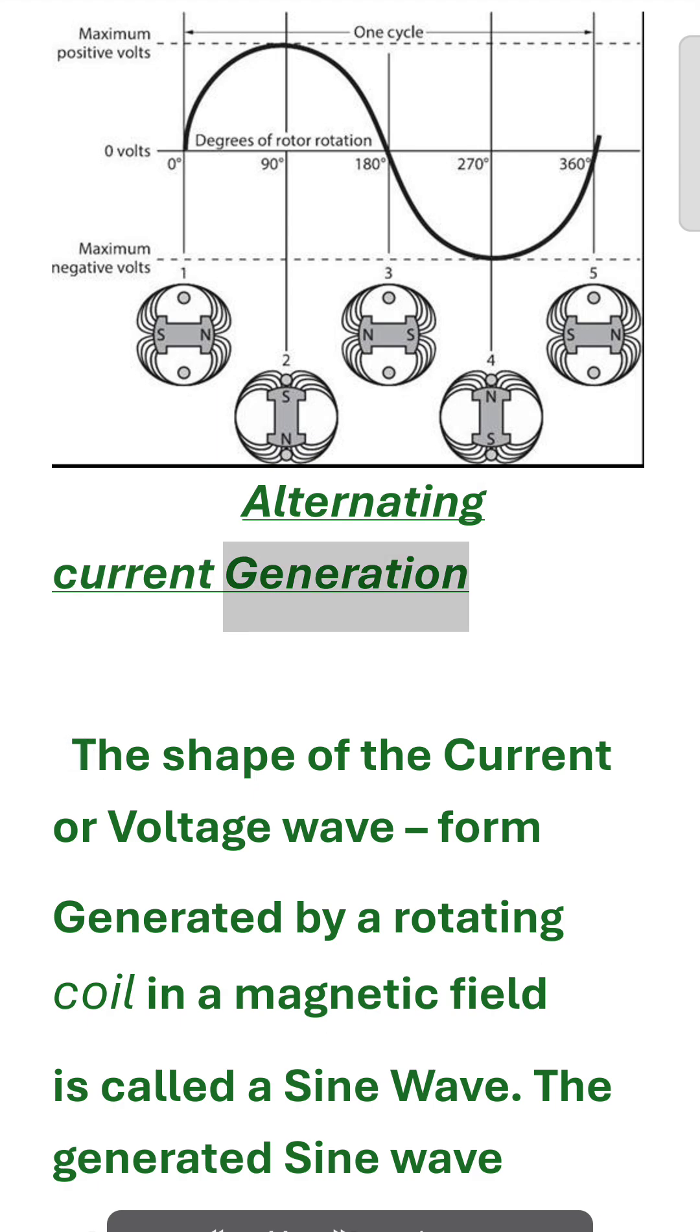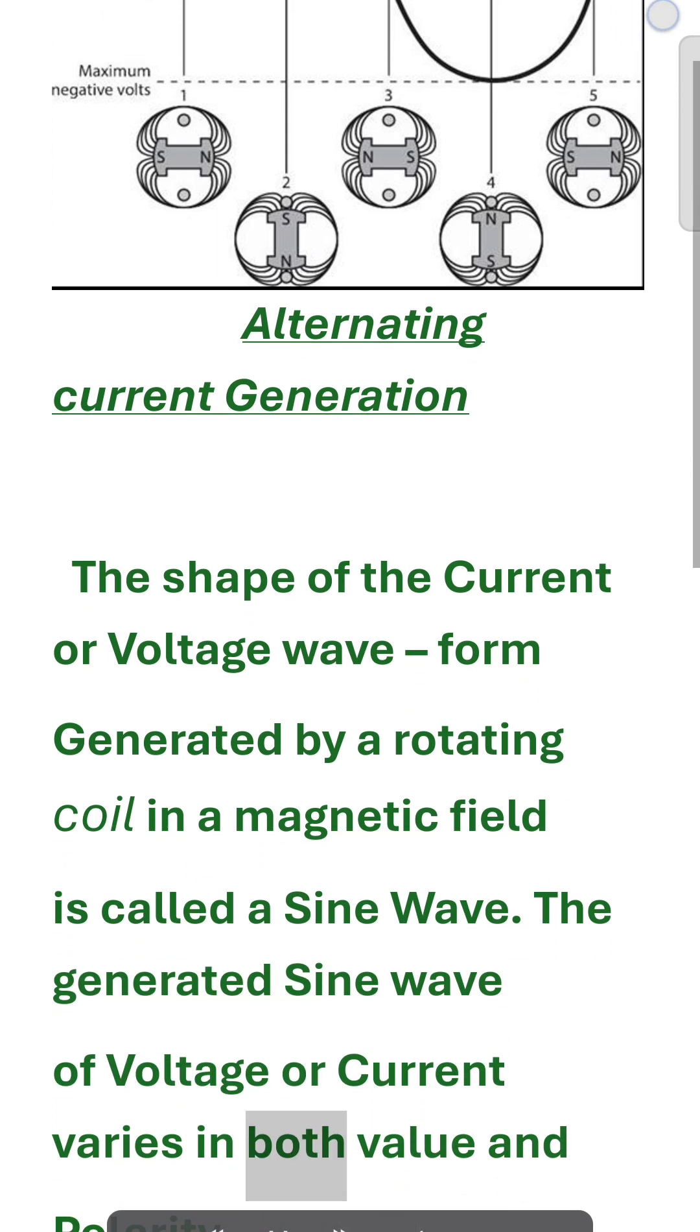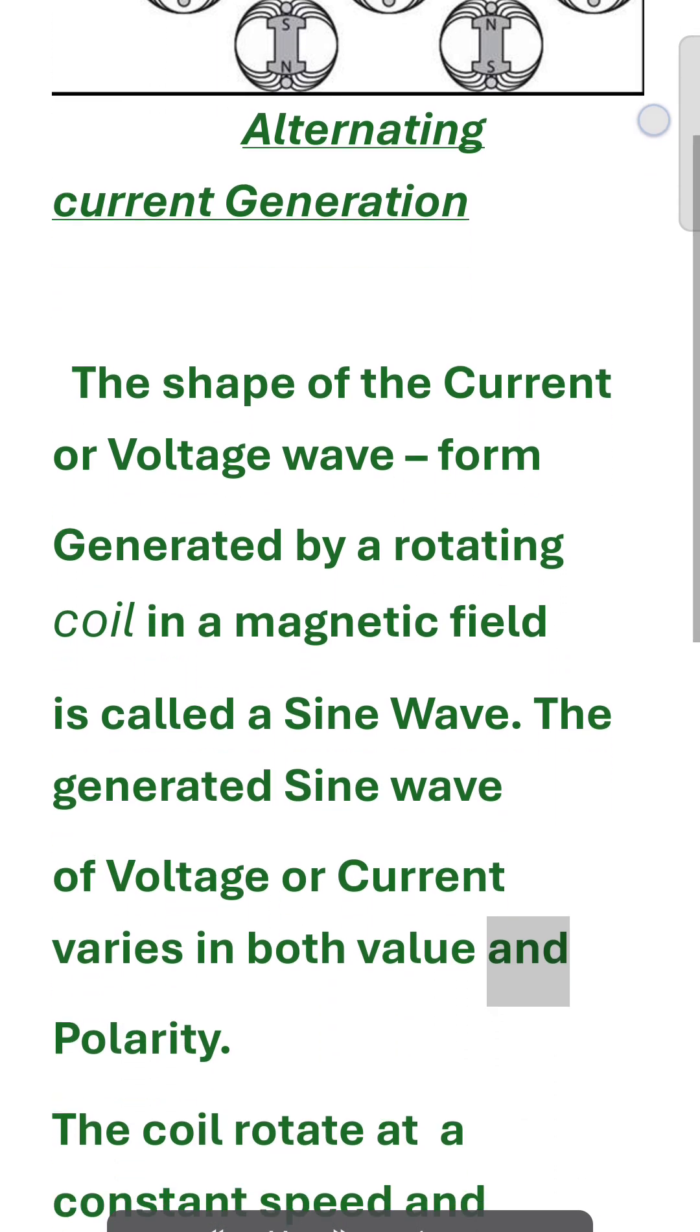Alternating Current Generation. The shape of the current or voltage waveform generated by a rotating coil in a magnetic field is called a sine wave. The generated sine wave of voltage or current varies in both value and polarity.